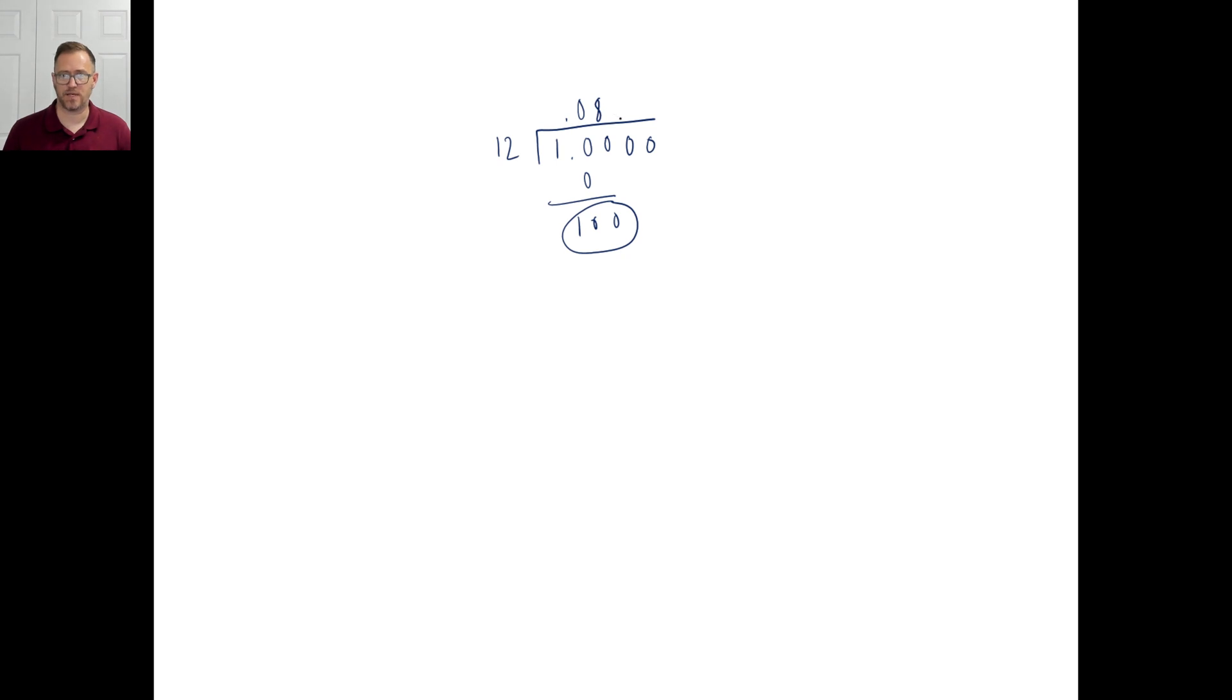12 times 8 is 96. What's left over? A 4 is left over. So we have 12 into 40 is 3. 3 times 12 is 36. 40 minus 36 is 4. 12 into 40 is 3. And then we keep going. And it goes like that. So you can write it like this if you want to. That is good enough. Because the 3 repeats over and over and over.